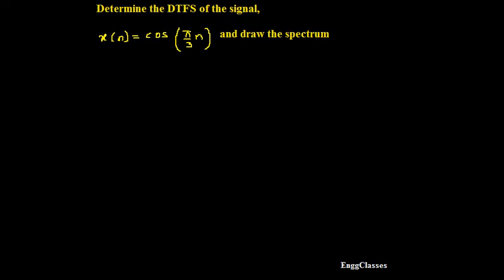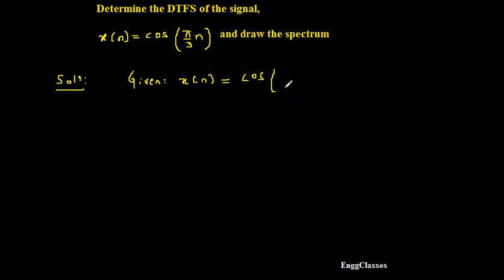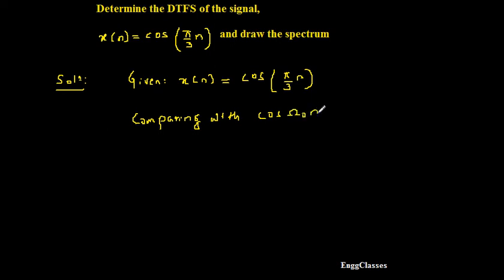Starting with the solution — given x of n is a discrete time signal equal to cosine of π/3 · n. Comparing this with the standard signal cos(ω₀ · n), I can find ω₀. Omega₀ is nothing but the angular frequency. Therefore, ω₀ is equal to π divided by 3. The next thing is I need to find the fundamental period.